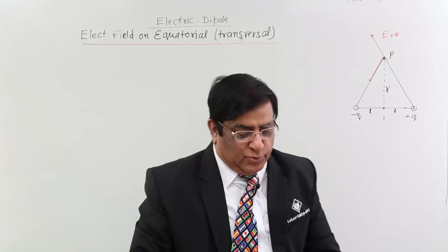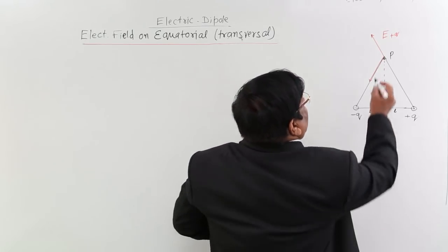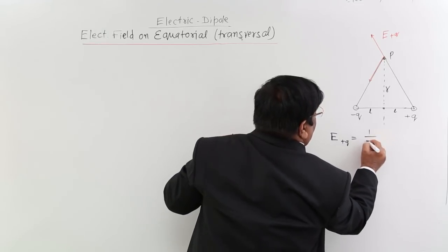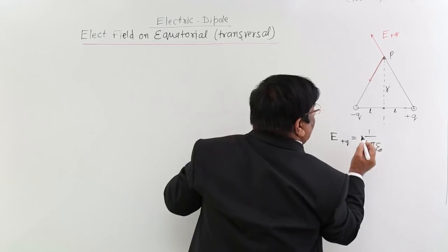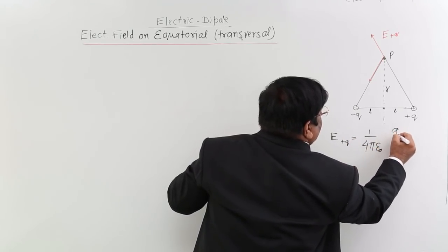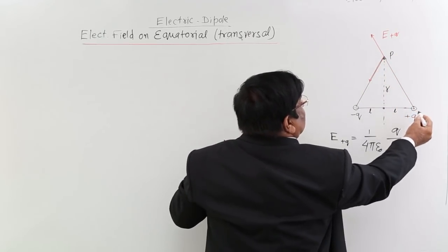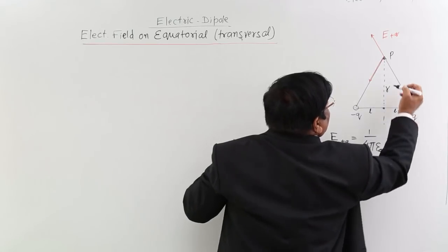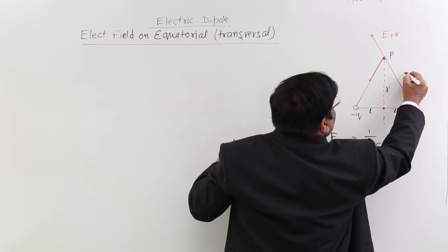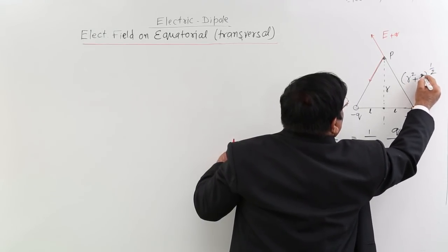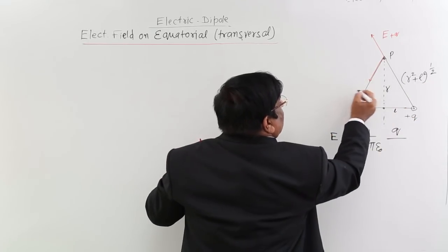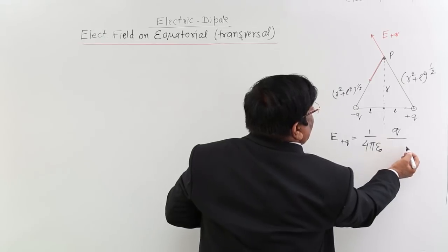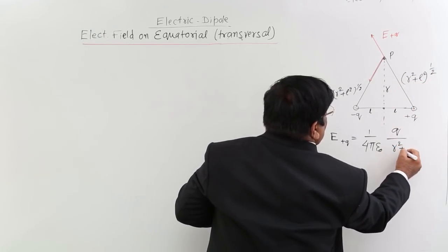Now we find the magnitude of both electric fields. The magnitude of E due to plus Q is equal to 1/(4πε₀) times Q/r², where r² is the square of the distance from the charge to point P. That distance is not R but √(R²+L²) by Pythagoras, since R is the perpendicular distance and L is the half-length. So the denominator becomes R²+L². The same applies for minus Q — the distance is also √(R²+L²), giving the same denominator R²+L².